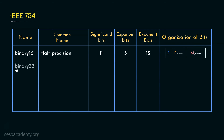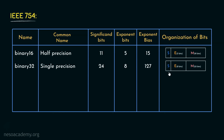Coming to the next one, it is Binary 32, which is commonly known as single precision. This specifies 24 bits for significant bits. Since 24 bits combinedly represent the sign and mantissa, 32 minus 24, that is 8 bits, will be used for the exponent. Since 8 bits are used for the exponent, the exponent bias is going to be 127. The organization of bits is: the MSB is the sign bit, the next 8 bits are for the biased exponent, and finally 23 bits are specified for the mantissa portion.